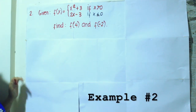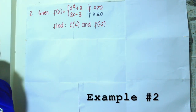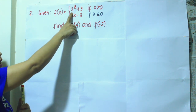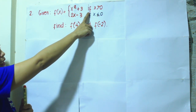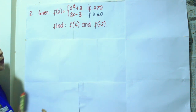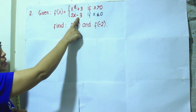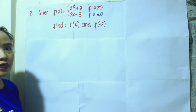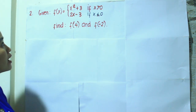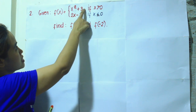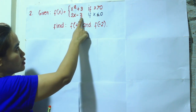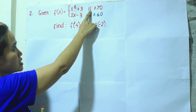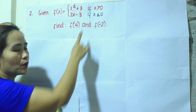Let's take example number 2. The given piecewise function is f of x equal to x squared plus 3 if x is greater than 0, and 2x minus 3 if x is less than or equal to 0. The two sub-functions are x squared plus 3 and 2x minus 3. The specified domain for x squared plus 3 is x is greater than 0.